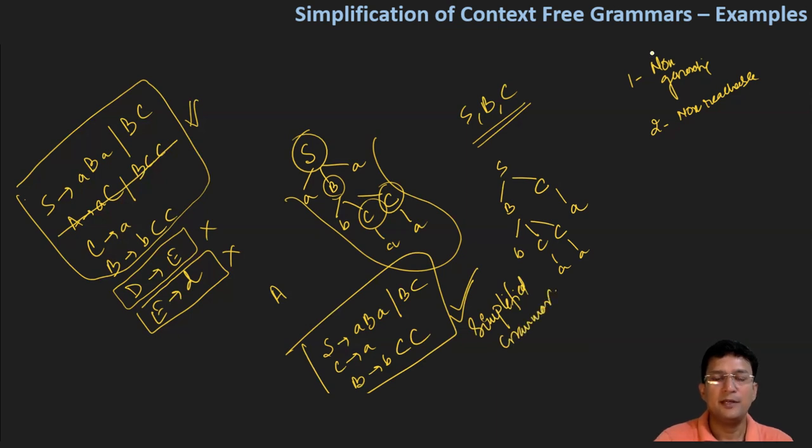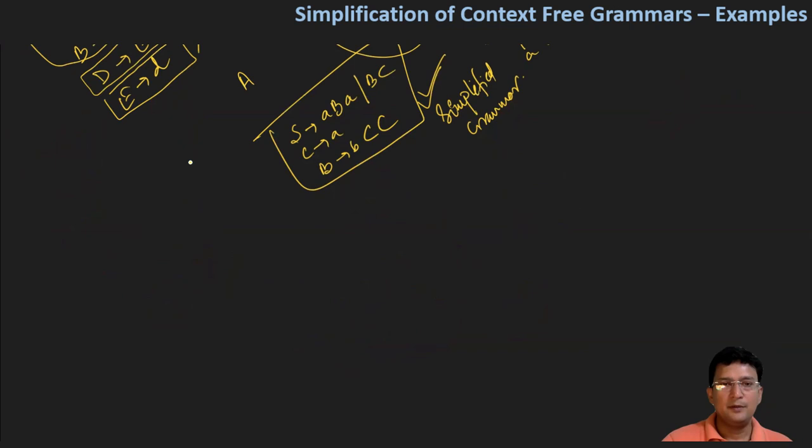Now let's take another example. The grammar is: S produces small a, capital A, and small a. A produces small b, capital B, and capital B. B produces AB, and C produces AB.